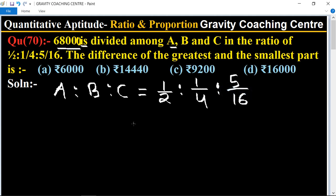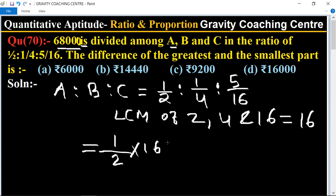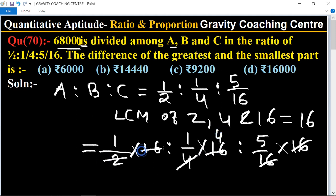First we take the LCM of 2, 4, 16. LCM of 2, 4 and 16 equal to 16. Equal to 1/2 into 16 ratio 1/4 into 16 ratio 5/16 multiply 16. This equals 8 ratio 4 ratio 5.